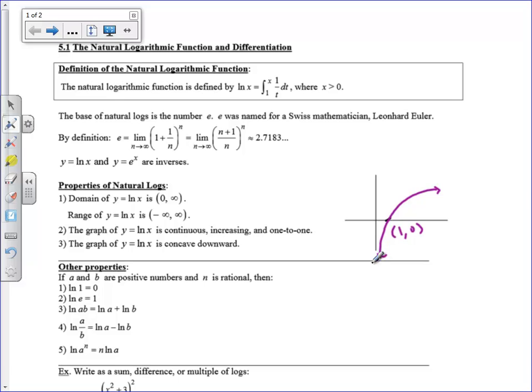There's an asymptote on the y-axis, so that goes down forever, and it also goes up forever, just rather slowly. It's continuous, increasing, one-to-one, which means it passes the horizontal line test, and it's concave down. We're going to find out why it's concave down a little bit later.